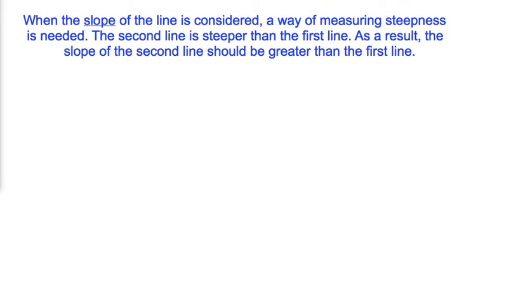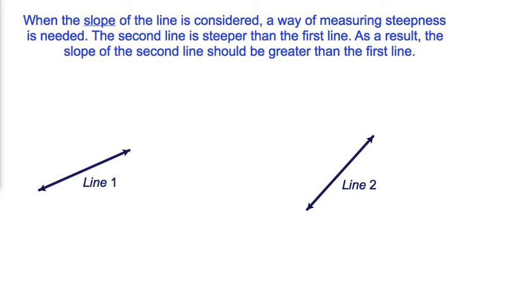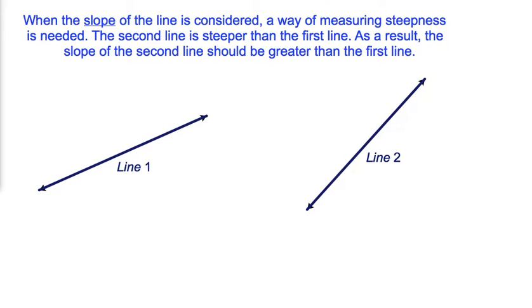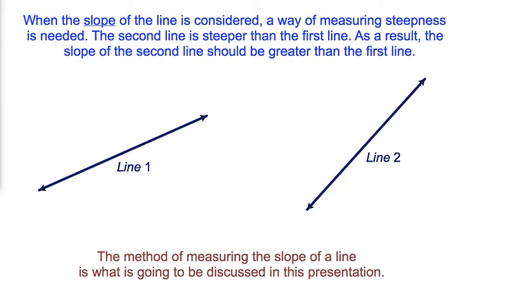When the slope of a line is considered, a way of measuring steepness is needed. The second line is steeper than the first line. As a result, the slope of the second line should be greater than the first line. The method of measuring the slope of a line is what is going to be discussed in this presentation.